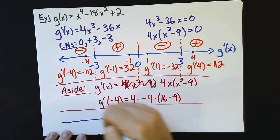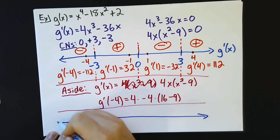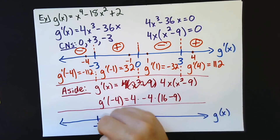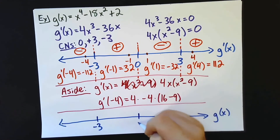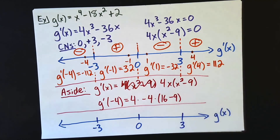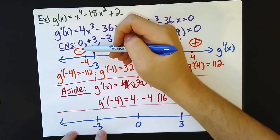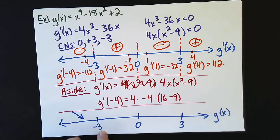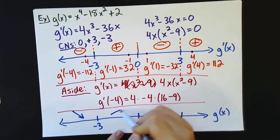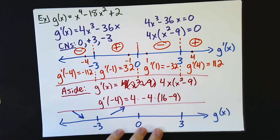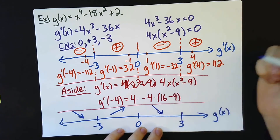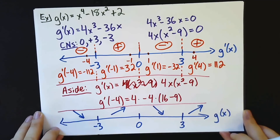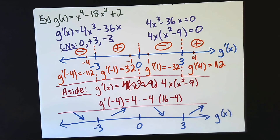Having completed the derivative profile, I go back and complete the increasing/decreasing profile for g of x. Copying the critical numbers down and translating: where the derivative was negative, g is decreasing; where positive, g is increasing. So the pattern is: decreasing, increasing, decreasing, increasing across the four intervals.